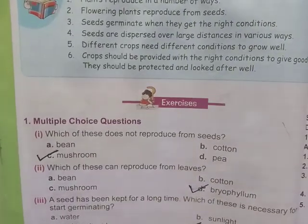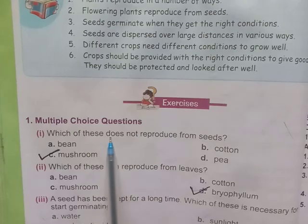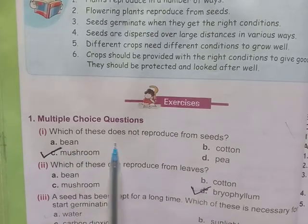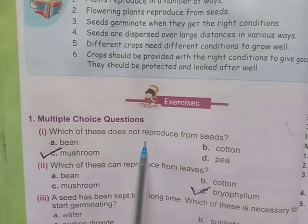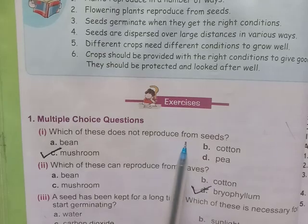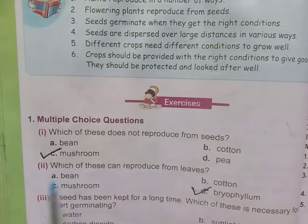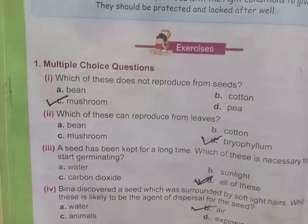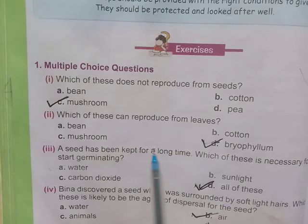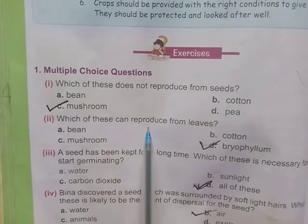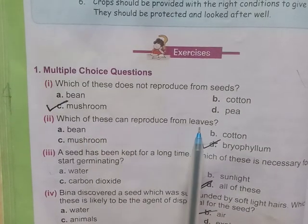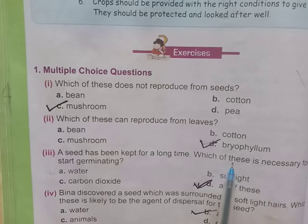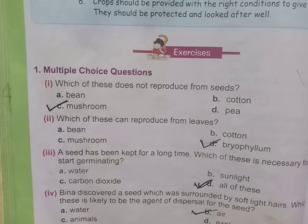First, multiple choice questions. Question 1: Which of these does not reproduce from seeds? Answer is mushroom. Question 2: Which of these can reproduce from leaves? Answer: bryophyllum.